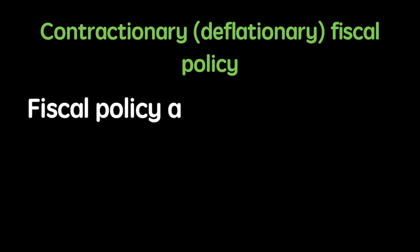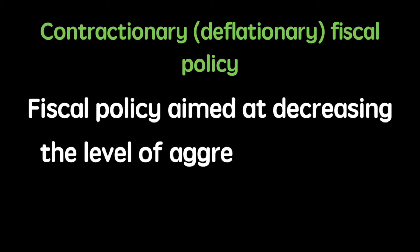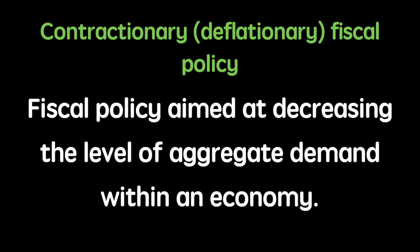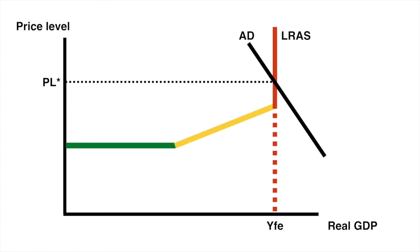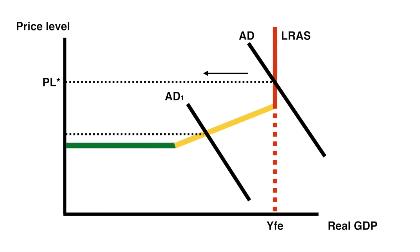Contractionary fiscal policy is fiscal policy aimed at decreasing the level of aggregate demand within an economy. This could be an attempt to cool off an economy and reduce inflationary pressures. The government wants to rein in economic activity, so they cut spending, increase taxes, or a combination of both. This will eventually reduce AD to AD1, causing a decrease in the price level from PL* to PL1 and a fall in real GDP from YFE to Y1.